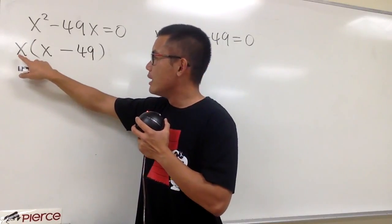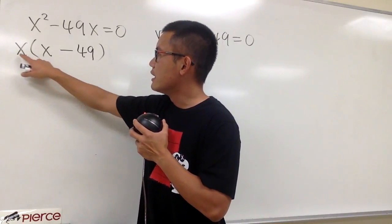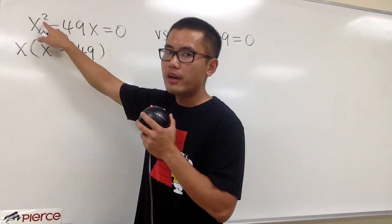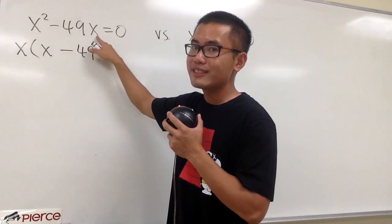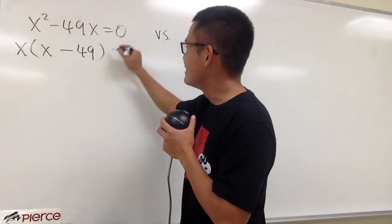If you were to go ahead and distribute the x into the parentheses, x times x, we get x squared. x times negative 49, we get negative 49x. We did it right. And this is still equal to 0.